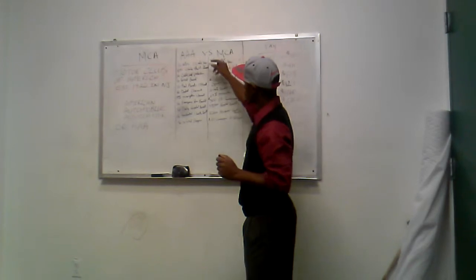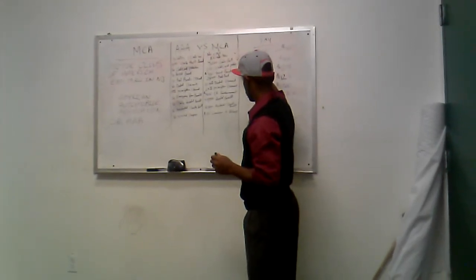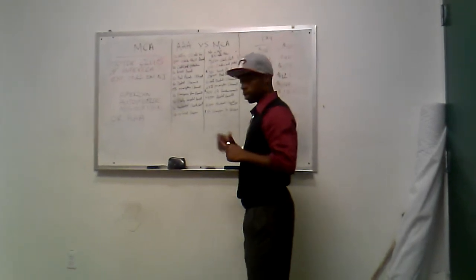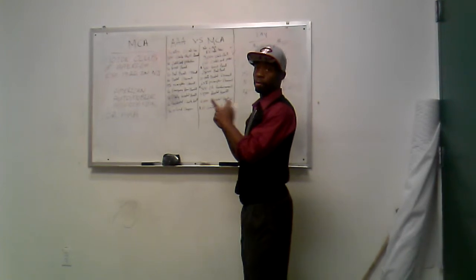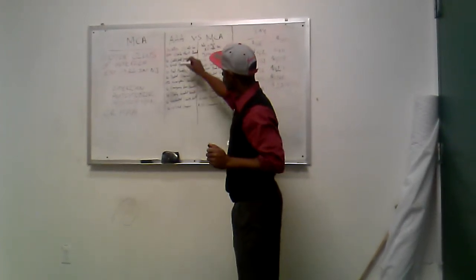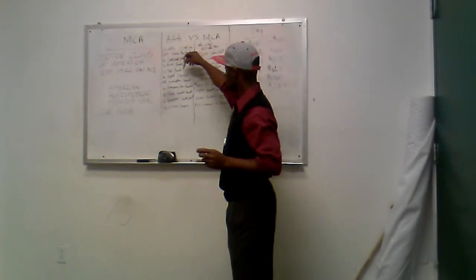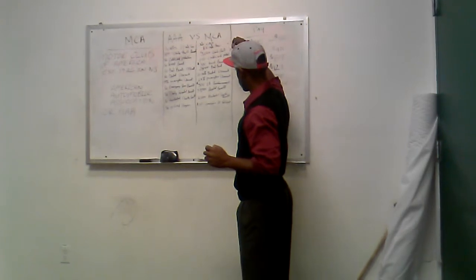No arrest bond on AAA. There's a $500 arrest bond with MCA. If you get pulled over by the police, on the back of your membership card it says $500 arrest bond. No bail bonds offered with AAA. You get $25,000 bail bonds offered on MCA.